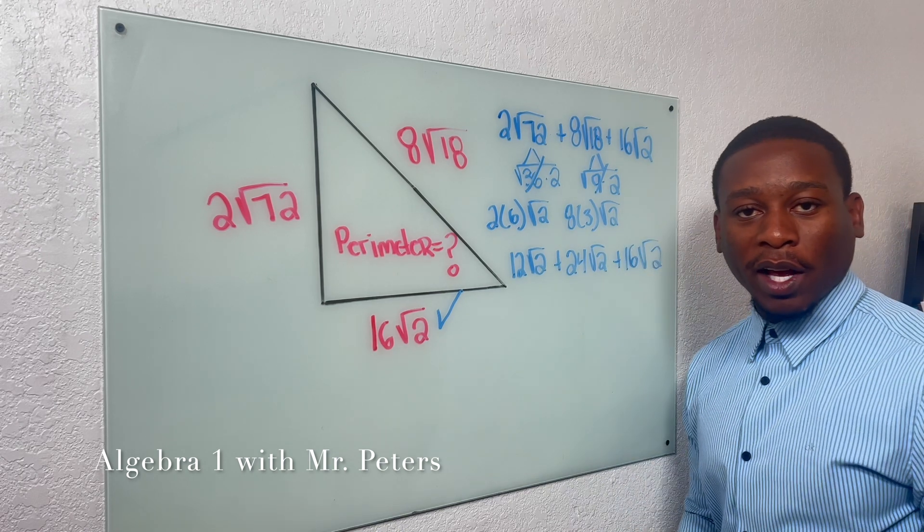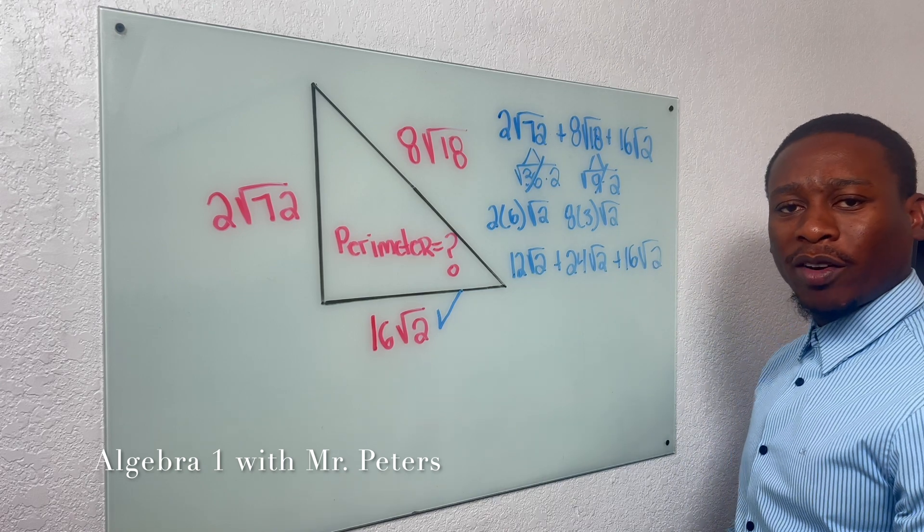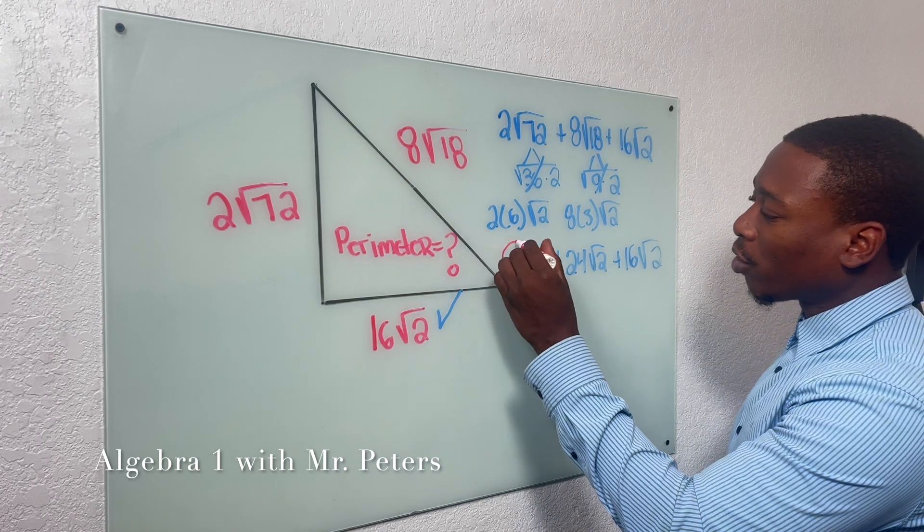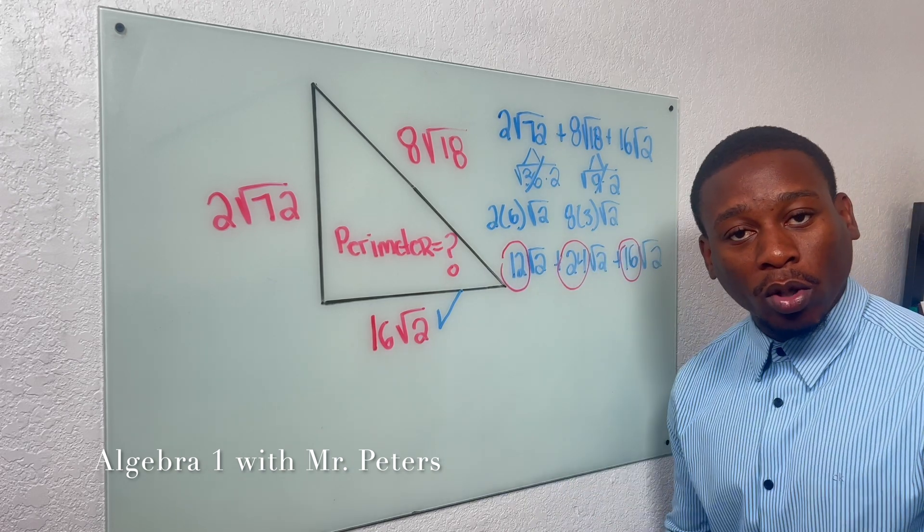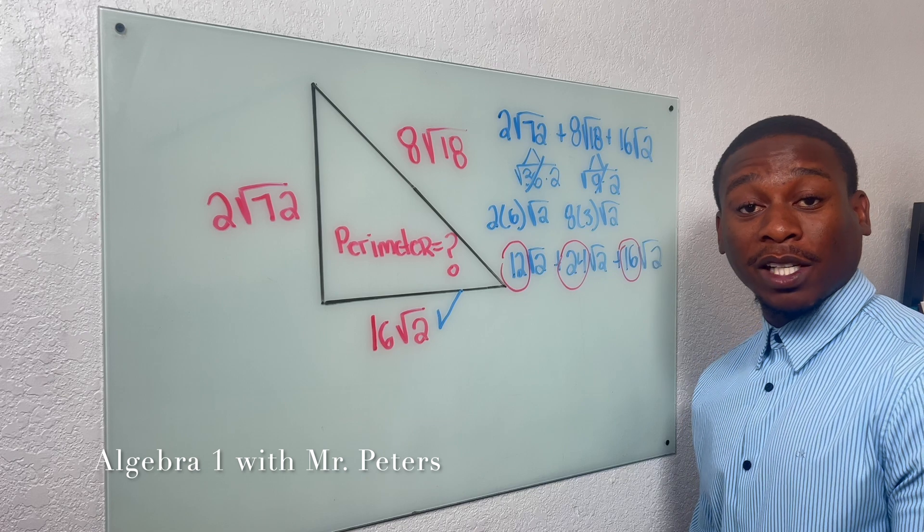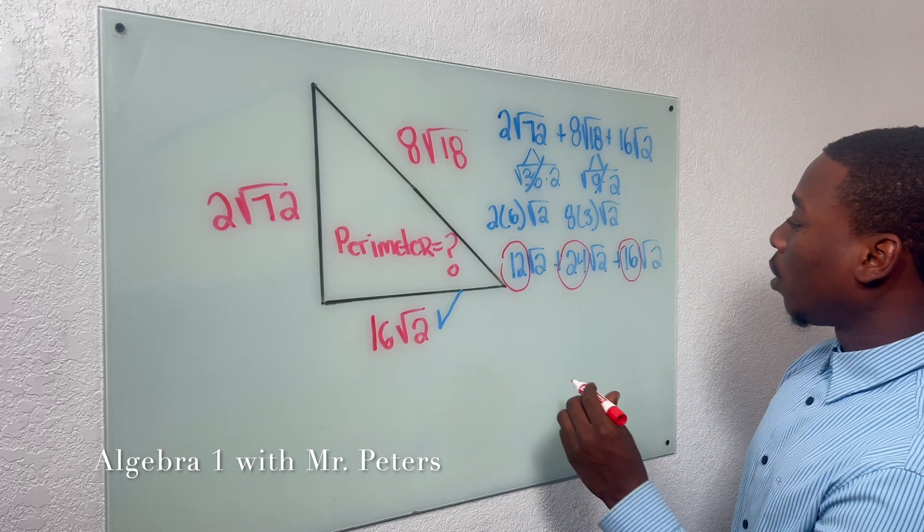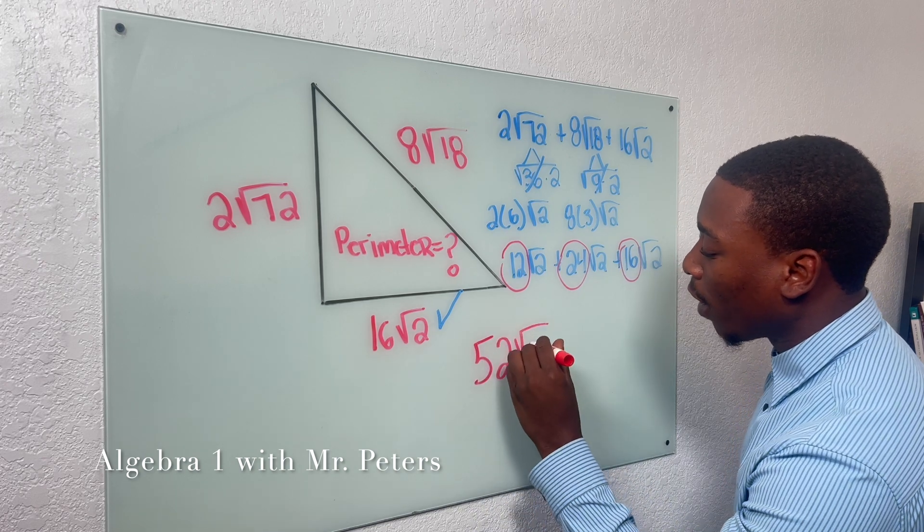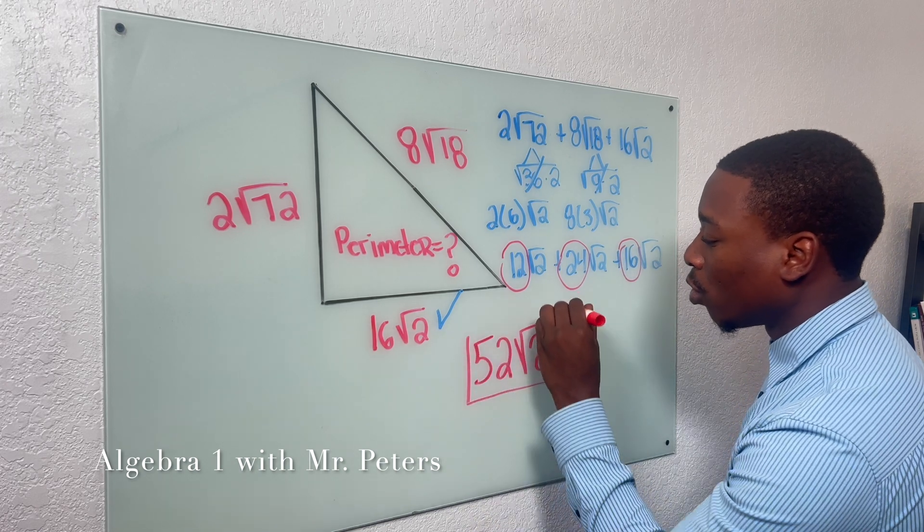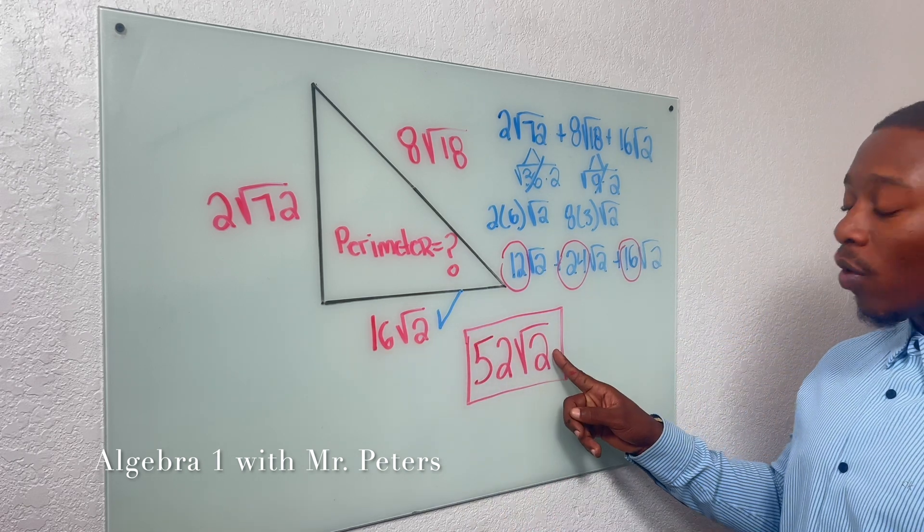So at this step now, guys, we're done with the problem just about. We just have to come up with our final answer. And the final answer is just adding our coefficients. Radical is going to stay the same. It acts as a variable. So my final answer, once we add this up, would be 52 radical 2. So final answer for our perimeter for this problem would be this right here.